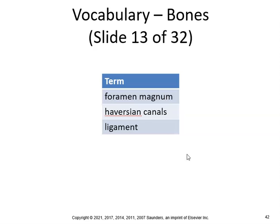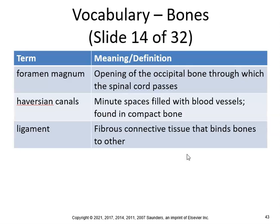The foramen magnum is the opening in the occipital bone through which the spinal cord passes. Haversian canals are minute spaces filled with blood vessels found in compact bone. A ligament is fibrous connective tissue that binds bones to other bones.